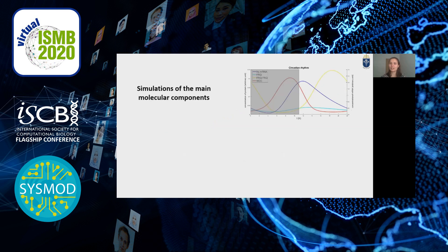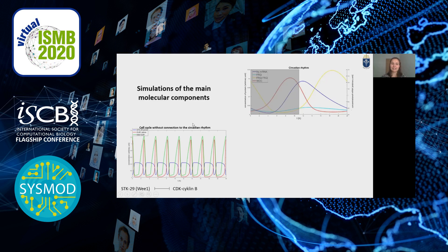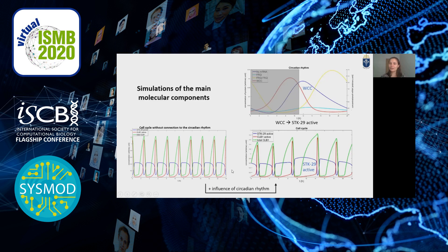On the first picture, we can see the simulation of the circadian molecules during subjective night and day, showing a periodic behavior. I also plotted the simulation of the cell cycle components without any connection to the circadian rhythm, where one cell cycle takes about three hours at every time of day. When the circadian rhythm affects the cell cycle, we can see that this is not the case — in the middle of the day, where WCC is in high concentration, it increases the active concentration of STK29, which stops the cell cycle and causes it to take longer.